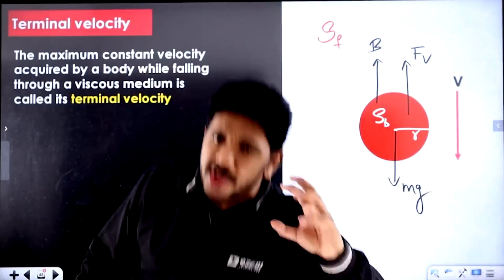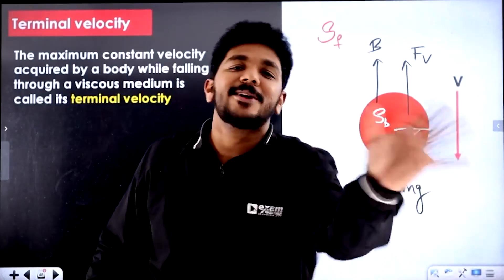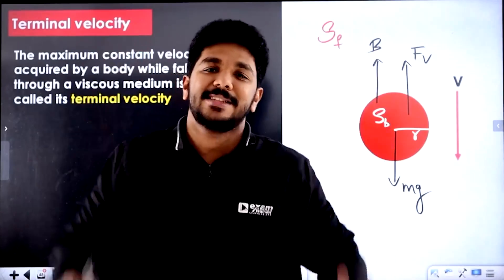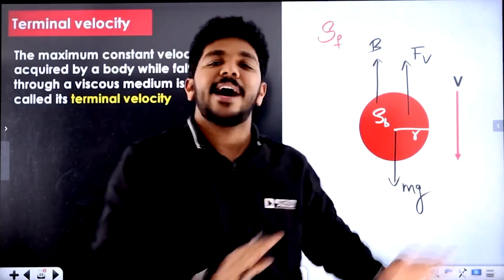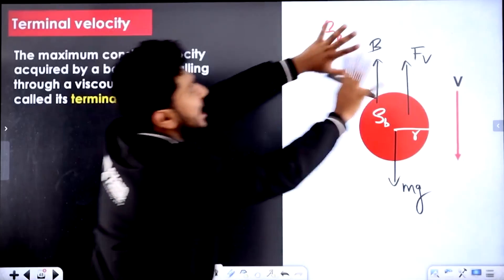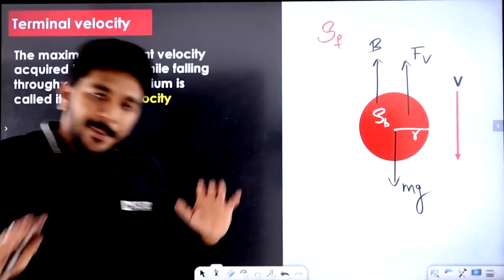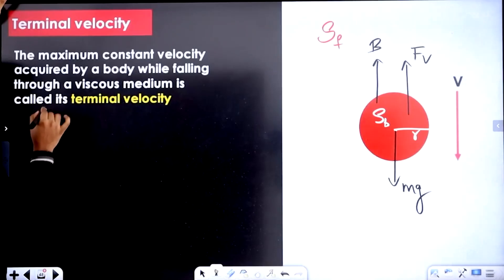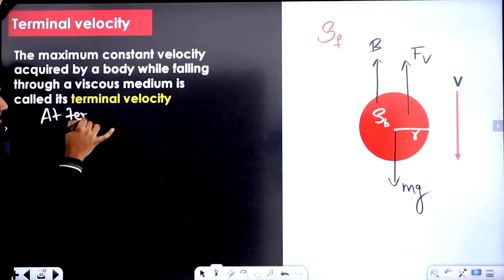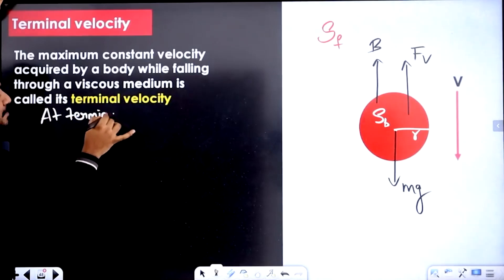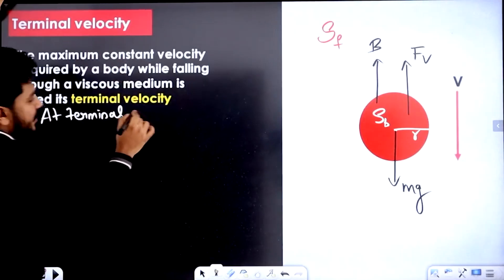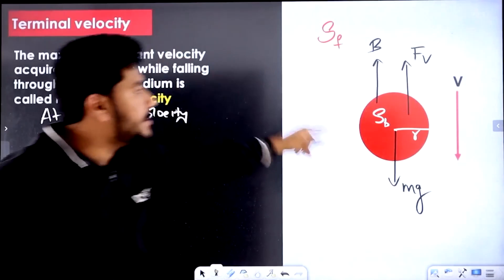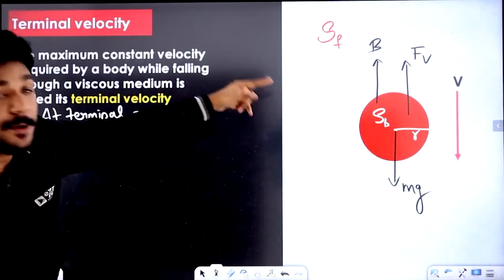It's not a maximum velocity yet — because there is still acceleration. It's not a constant velocity. That's a constant velocity when all forces are balanced. Because all forces are balanced at terminal velocity — all forces are balanced in the vertical direction.